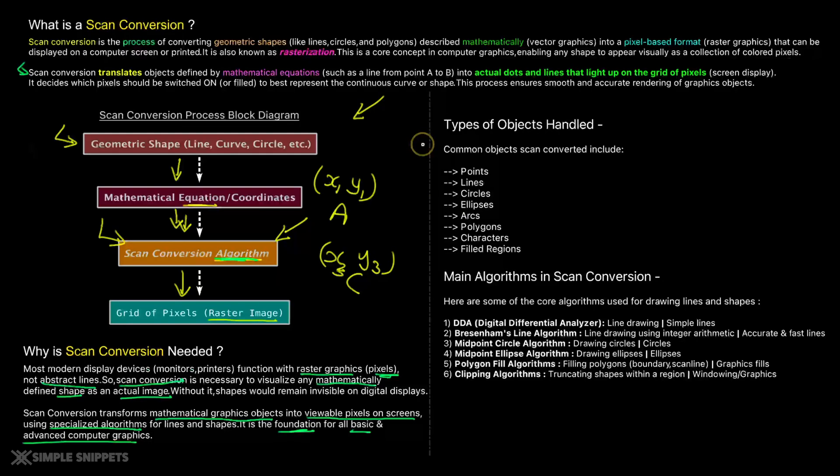So what are these common geometric shapes and objects and what are some basic algorithms in scan conversion? So common objects generally scan conversion converts into our points. We have lines, we have circles, we have ellipses, arcs, polygons, characters, some regions that are filled.